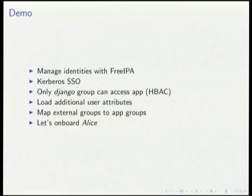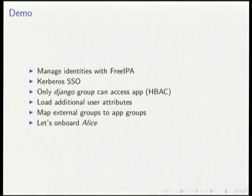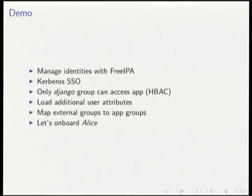We'll go straight to the demo now. We're going to manage a user identity with FreeIPA, use Kerberos to do SSO to authenticate to an application. This application is configured so that only users who are members of the Django group can access it. We're going to load additional user attributes via the request environment into the application, see that we can map external groups stored in the centralized identity management system to groups in the application, and we're going to onboard Alice, who is a new employee in our organization.